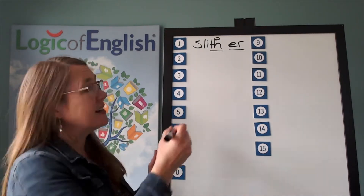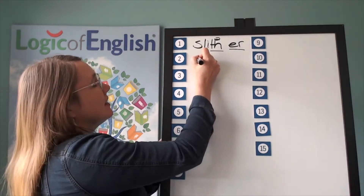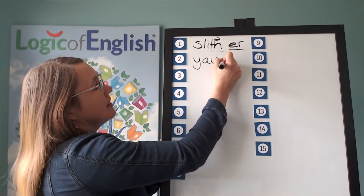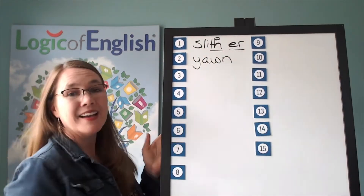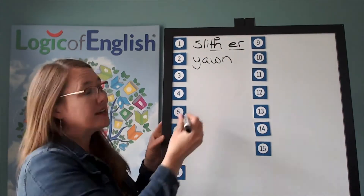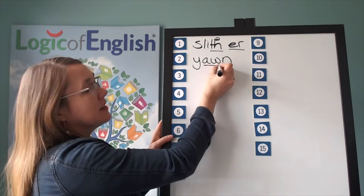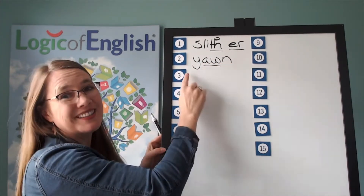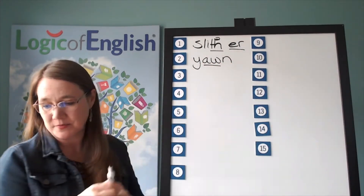Help me to write it: ya-aw-n. And how will we mark it? We'll underline the aw. Let's read it: ya-aw-n — yawn.